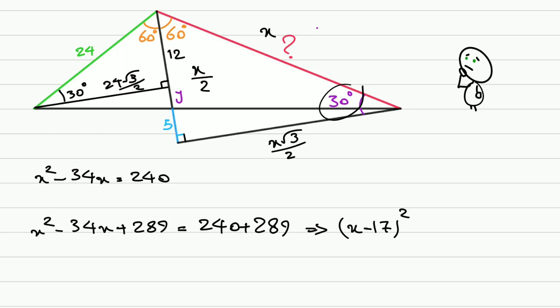So it is (x minus 17) squared, and this is 529. Fortunately, that's a complete square. That's 23 squared. So x minus 17 is positive or negative 23.